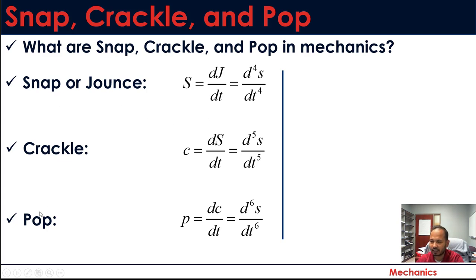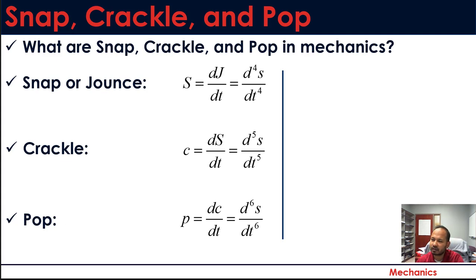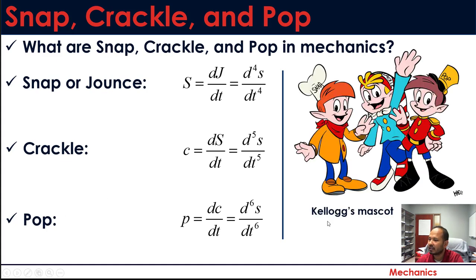Above sixth order — seventh, eighth, and so on — you can keep going, but those derivatives don't have names yet. And if you're wondering where the names snap, crackle, and pop came from — yes, they're the mascots of Kellogg's Rice Krispies cereal, and those names were borrowed from there.